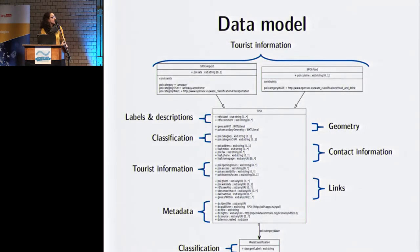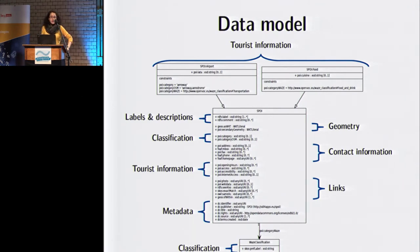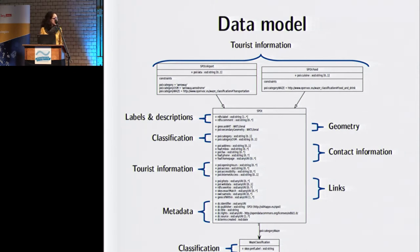How does the common data model look like? We have seven classes in the data model with several attributes. There are labels and descriptions, and geometry — both primary geometry and secondary. Secondary geometry means that if you have a feature that can be geolocated as a point or as an area, the secondary option is stored in the secondary geometry attribute. Then there is classification — actually three classifications. One is the main obligatory one, reused from Open Navigation Ways classifications, and the other two are based on OpenStreetMap.